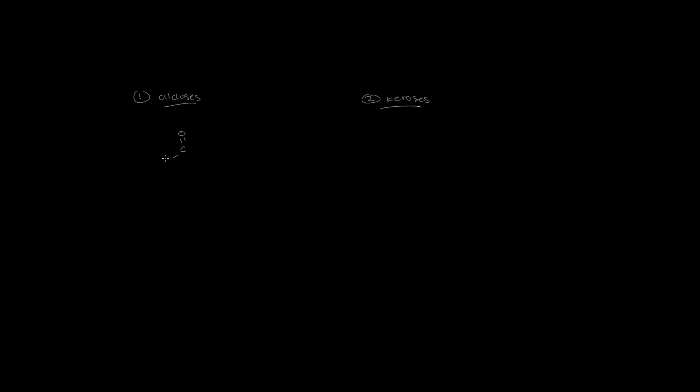Generally speaking, we have two types of sugars: aldoses and ketoses. Aldoses are sugars with aldehyde groups, which are functional groups with a carbonyl group, a hydrogen attached to the central carbon atom, and a variable group represented by R.